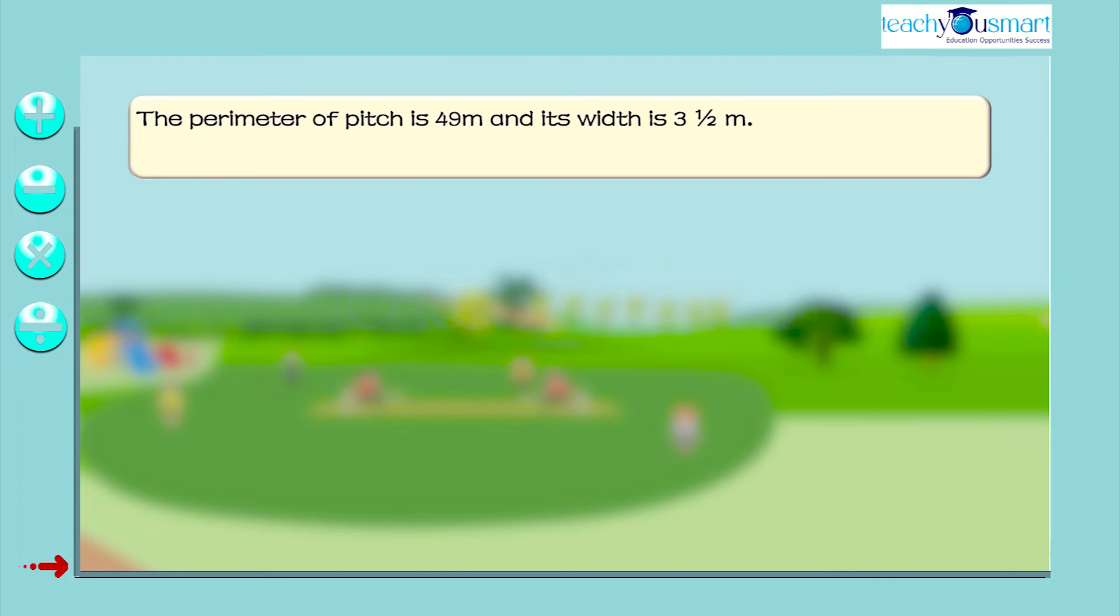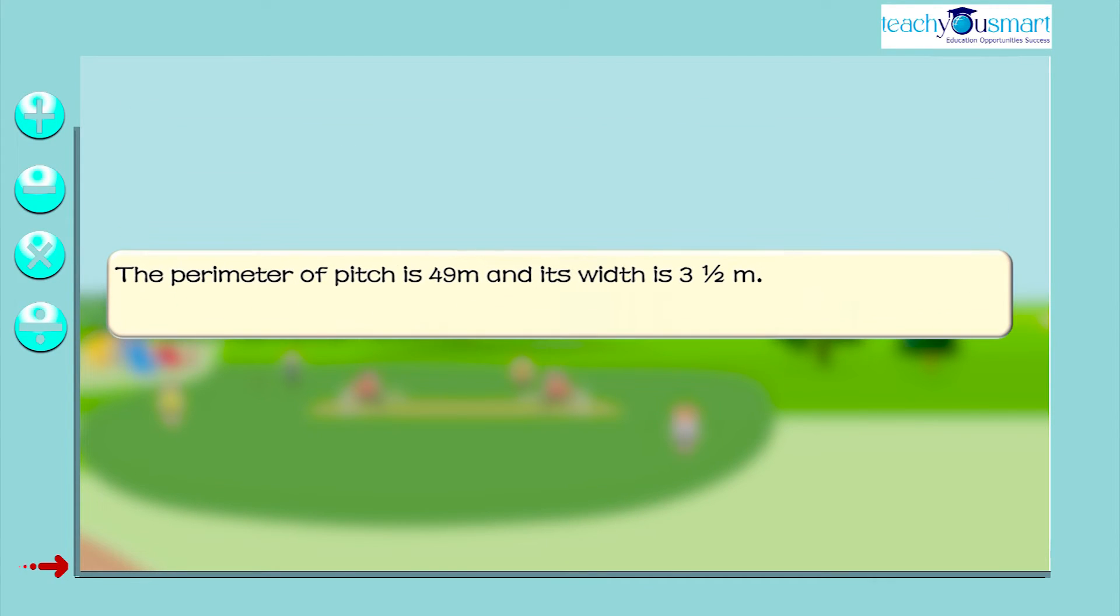If the perimeter of the pitch is 49 meters and its width is 3.5 meters, then what will be its length?